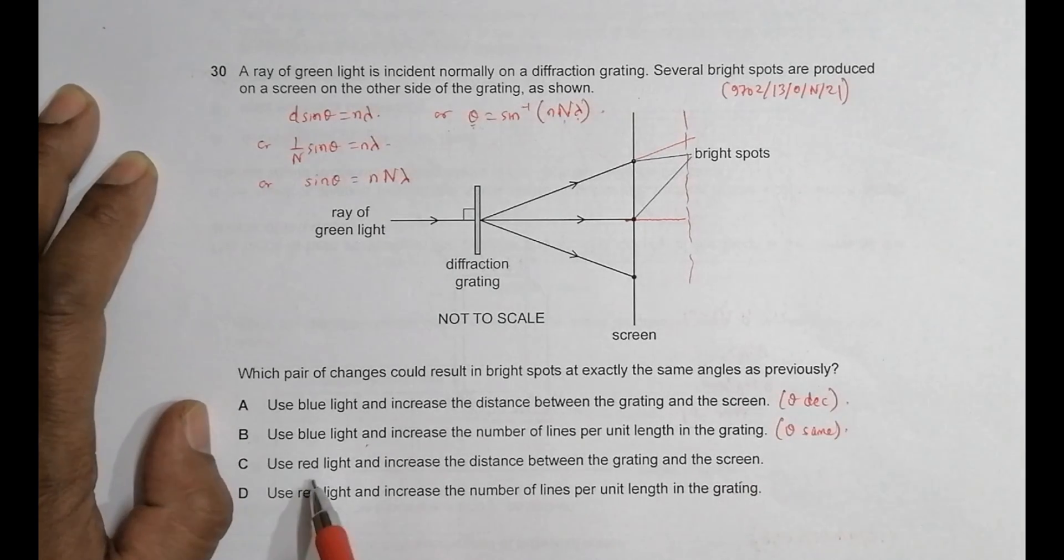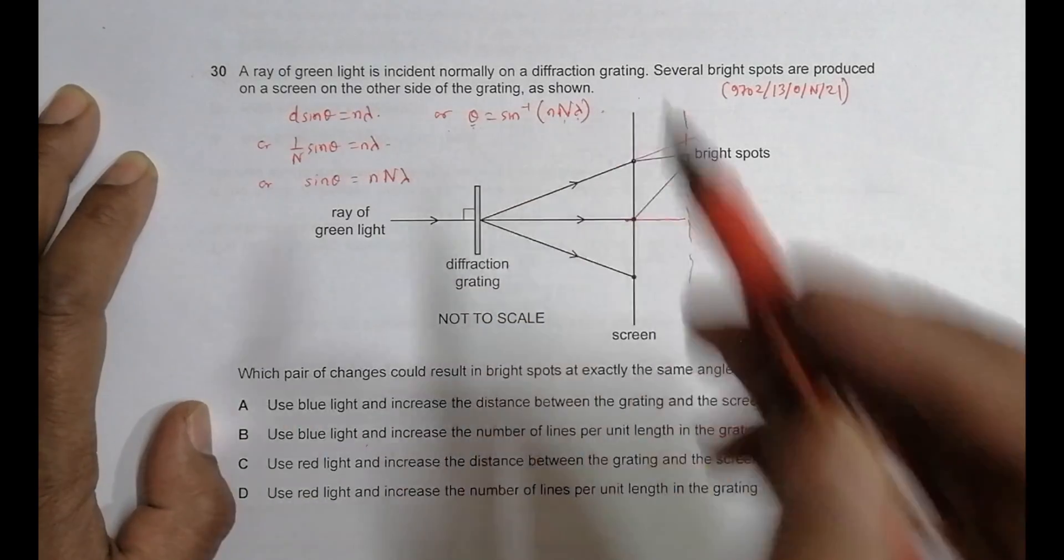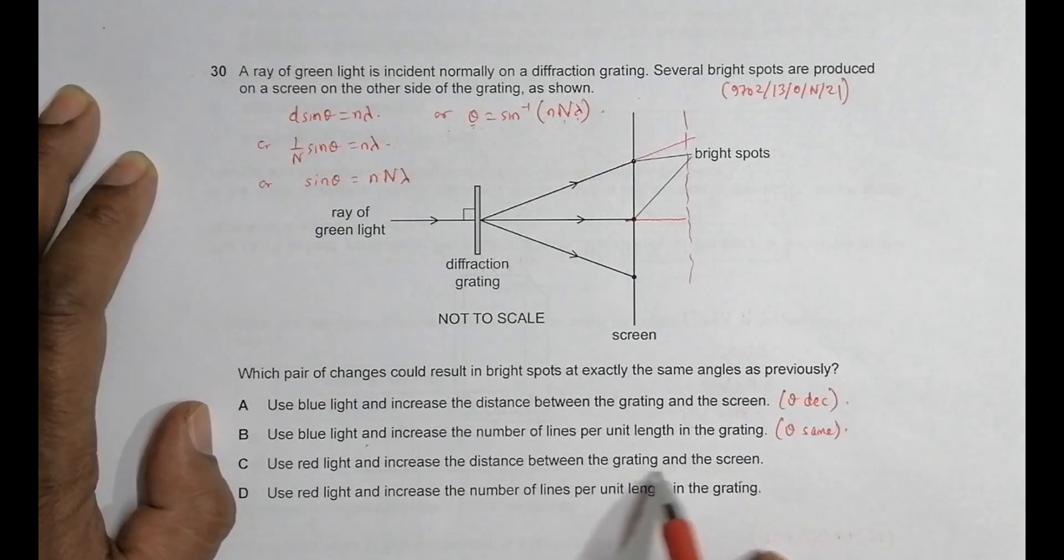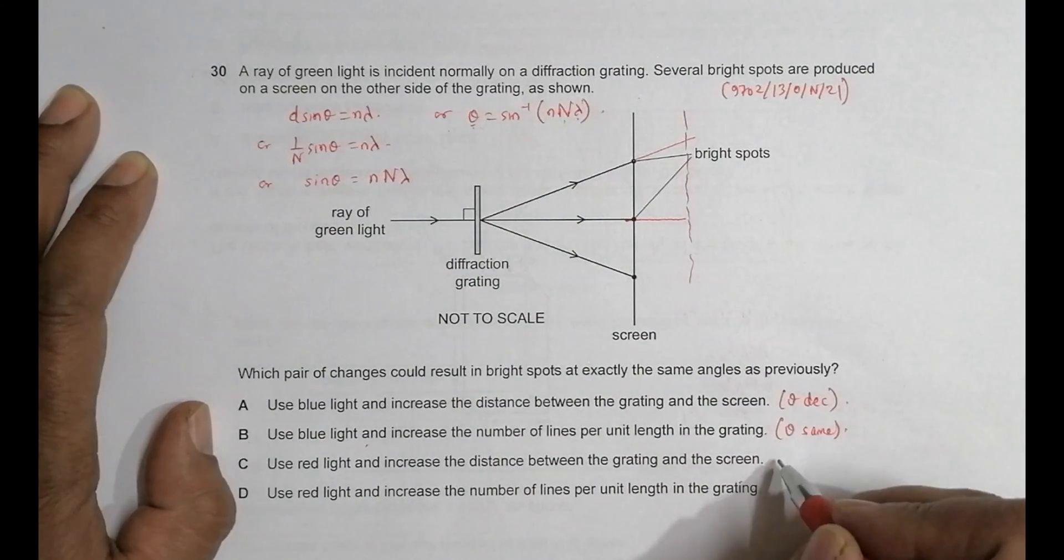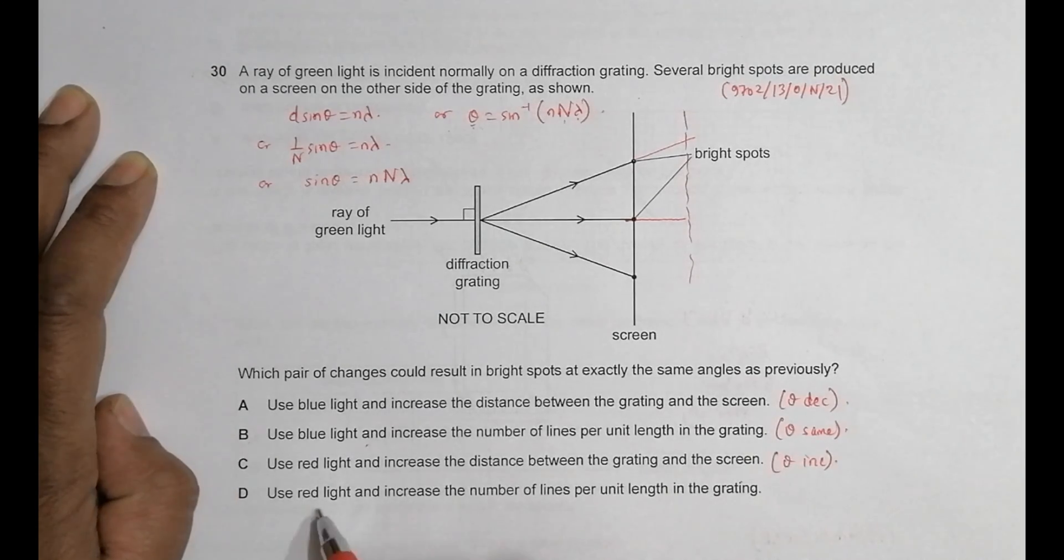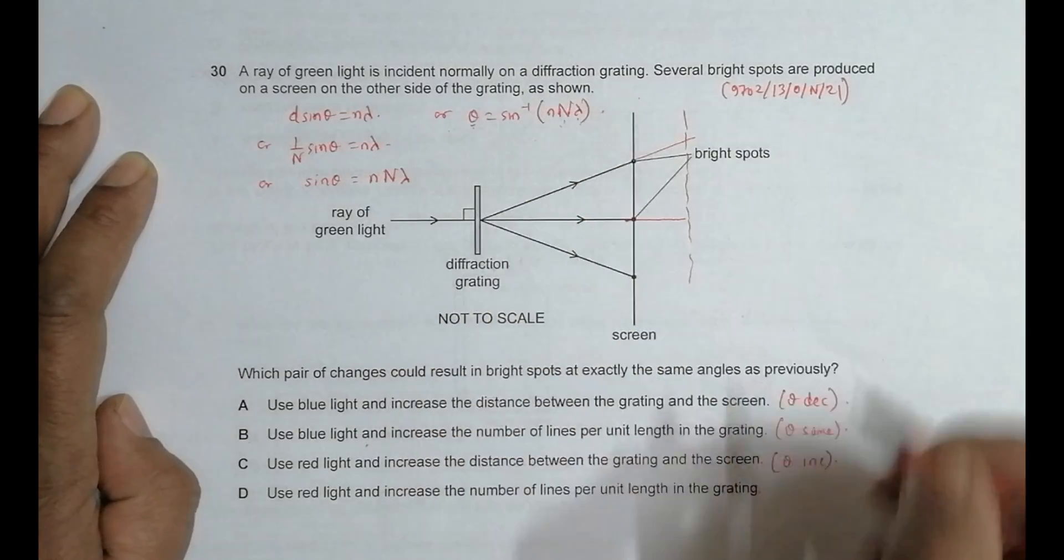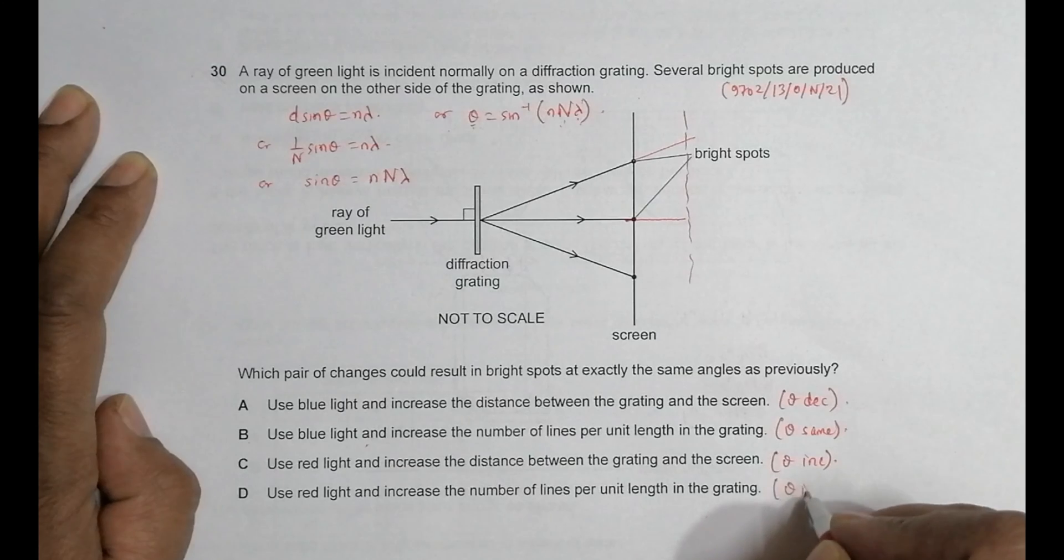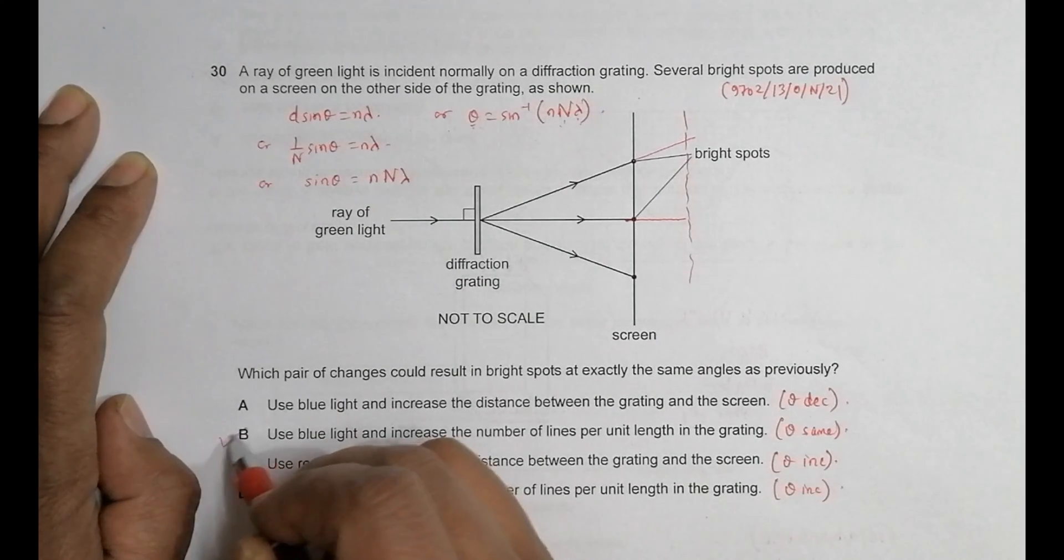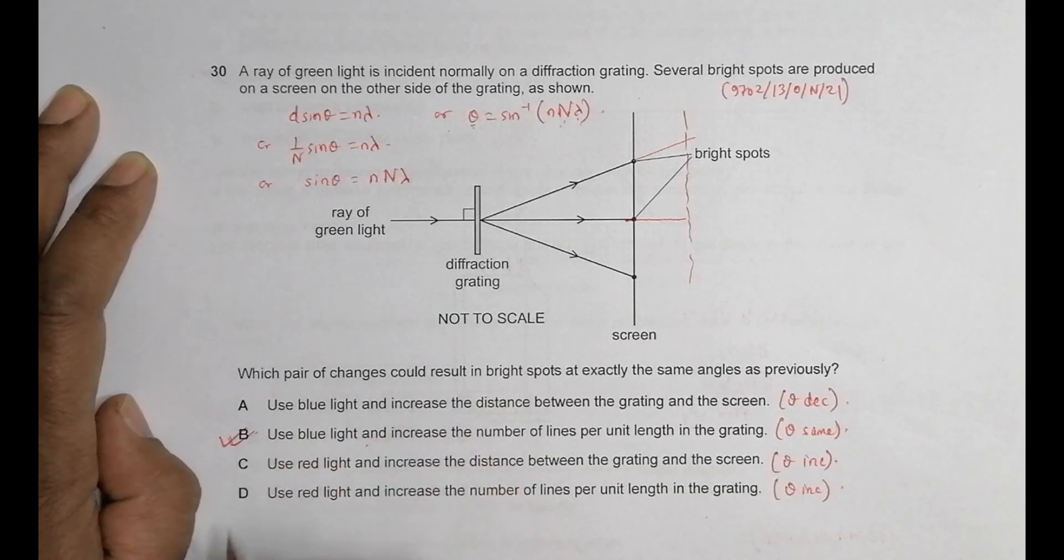Next use red light, red light means that lambda is increased and increase the distance between, it has no effect. So here theta will increase. Next use red light lambda increase and increase the number of lines per unit length, increase this again, increase, increase, it's again increase. So theta increase. So the only choice that is feasible is choice number B where theta remains same. So choice number B should be the correct choice.